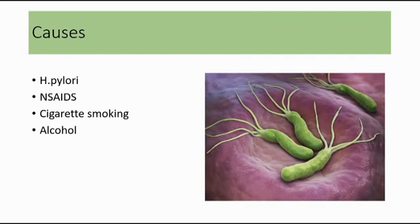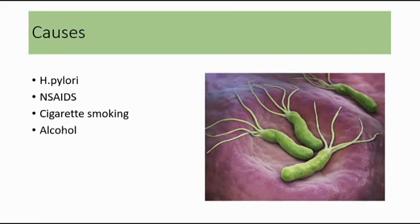NSAIDs like aspirin impair mucosal prostaglandin production through non-selective COX inhibition. Prostaglandins are very important for mucosal bicarbonate and mucin production, and they also inhibit gastric acid secretion, as well as maintaining mucosal blood flow to prevent ulcers. When NSAIDs impair prostaglandin production, there is decreased bicarbonate production and increased gastric acid, causing the imbalance. Other causes of peptic ulcer disease include cigarette smoking and alcohol.